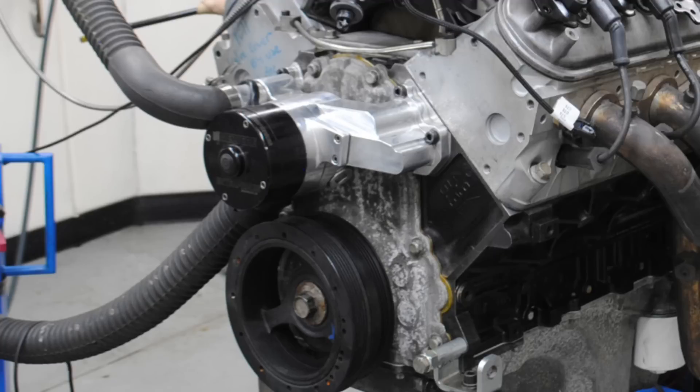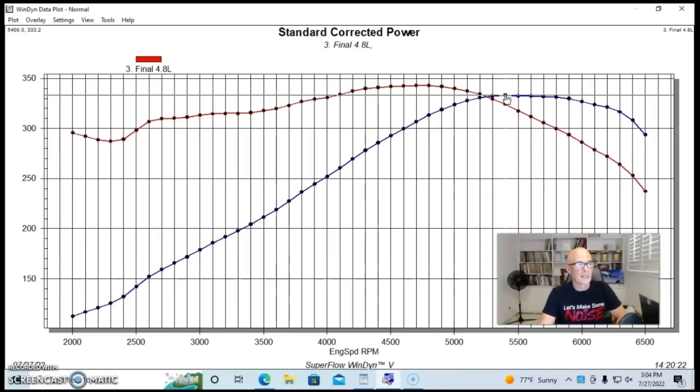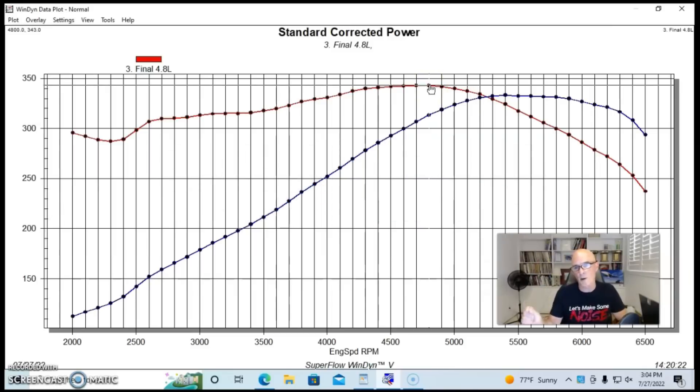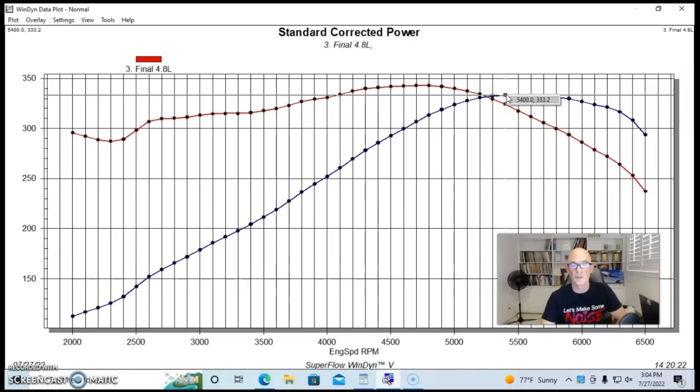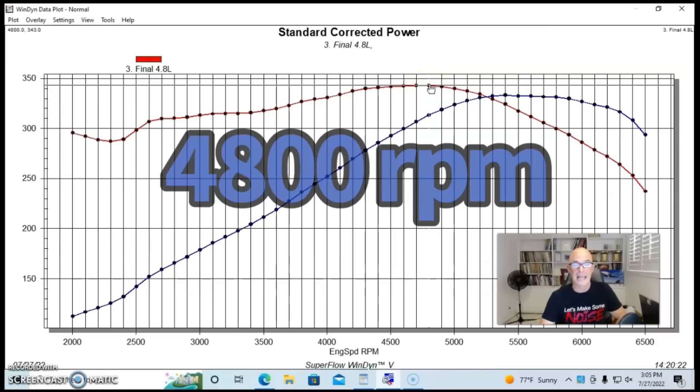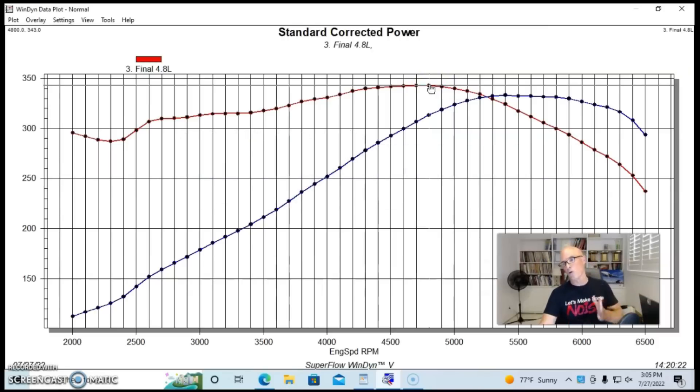We ran a Meziere electric water pump on this thing. Our 4.8 produced 333 horsepower and 343 foot-pounds of torque. So a little bit more torque than horsepower, but you can see this thing made peak power out at 5,400 RPM. Peak torque occurred at 343, both the same at 4,700 and 4,800 RPM. And we ran this thing all the way out to 6,500, although you can see it definitely is falling off. It's on the downward side of the power curve revving it out that high. But it's a 4.8 and you can rev them that high. In fact, you can rev any LS that high.